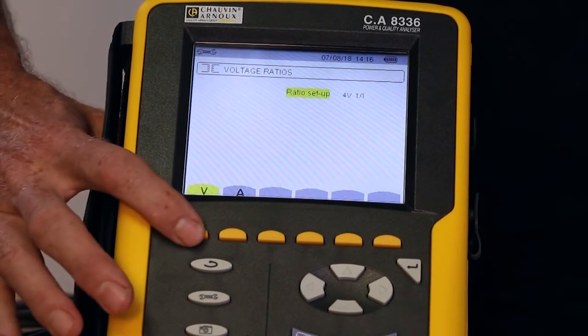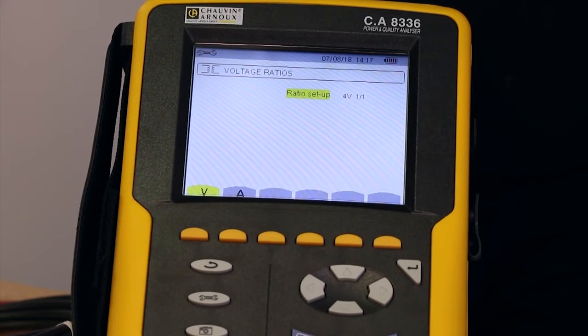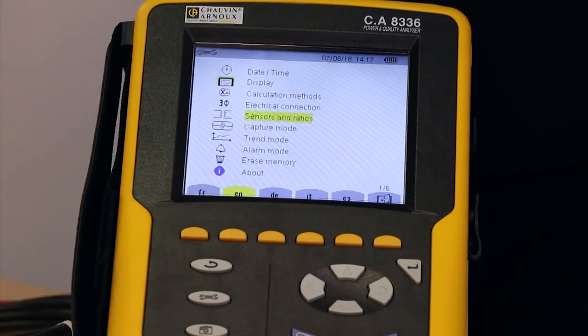On this screen, you can also set the transformer ratios for high voltage supply connections. But for low voltage connections of 220V or 400V phase to phase, there'll be no ratio here.